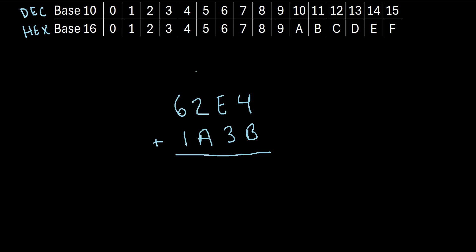Now let's try another example. Let's say we have 62E4 plus 1A3B. How can we add these two hexadecimal numbers? We'll start with the first column. What is 4 plus B? Remember B is the same as 11. So we really have 4 plus 11, which is 15. And in the hexadecimal system, F is the letter that represents 15. So we'll write an F right here.